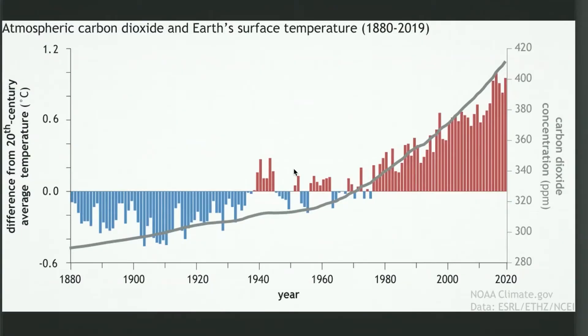I do have an example of a dual axis chart that I think does its job. It has been replicated many times, but in this particular version it uses NOAA data and is produced by climate.gov. The chart shows atmospheric carbon dioxide and the earth's surface temperature from 1880 to 2019. On the horizontal x-axis we have time running from 1880 to 2019.